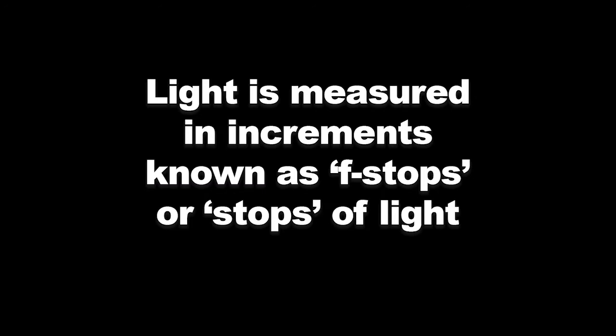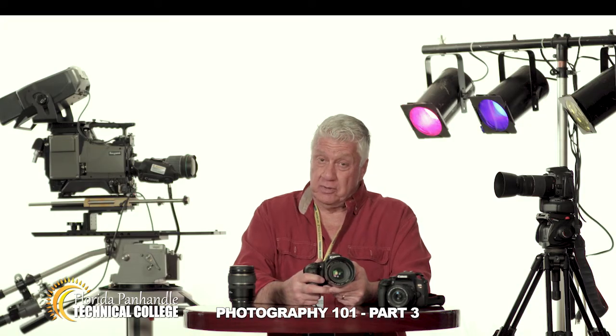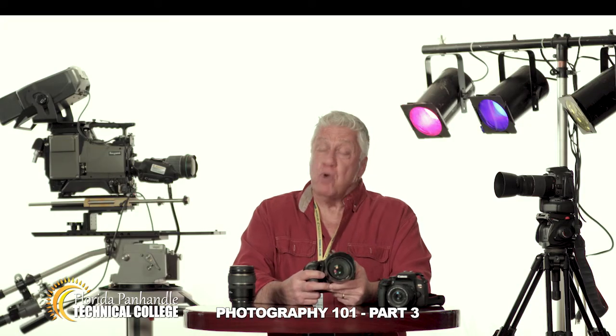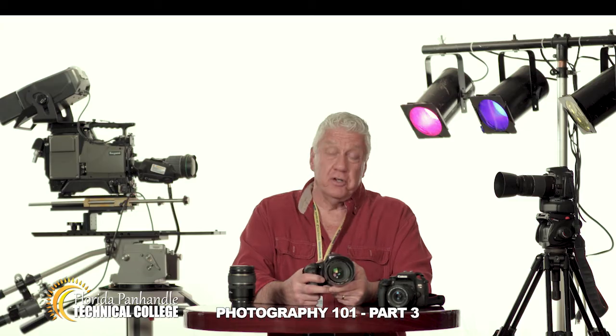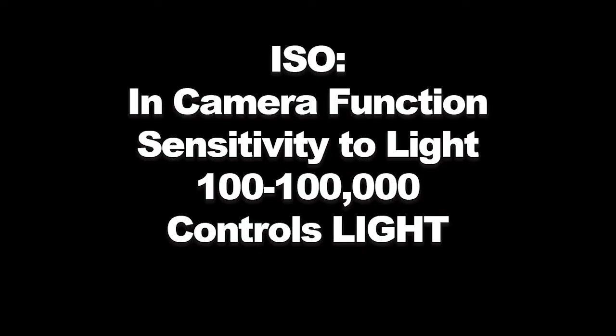And if you can multiply by or divide by two, this becomes relatively easy to understand. ISO determines the sensitivity of the camera's sensor and varies from 100 to 100,000.